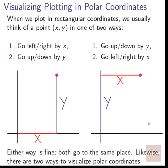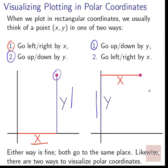How can we visualize polar coordinates? When we plot in rectangular coordinates, we think of a point as going left or right by x, then up or down by y — or we can do the vertical motion first and then the horizontal. Either way, we wind up at the same location. Likewise, there are two ways to visualize polar coordinates.